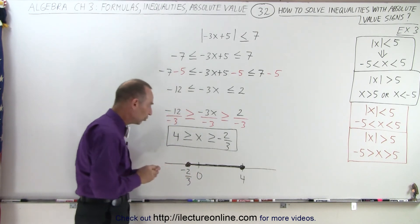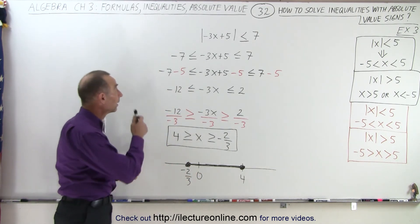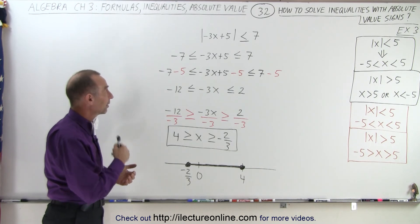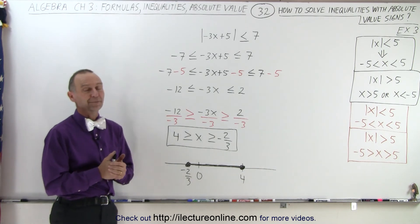And so that is then the solution to our inequality. The absolute value of minus 3x plus 5 is less than or equal to 7. And that is how it's done.